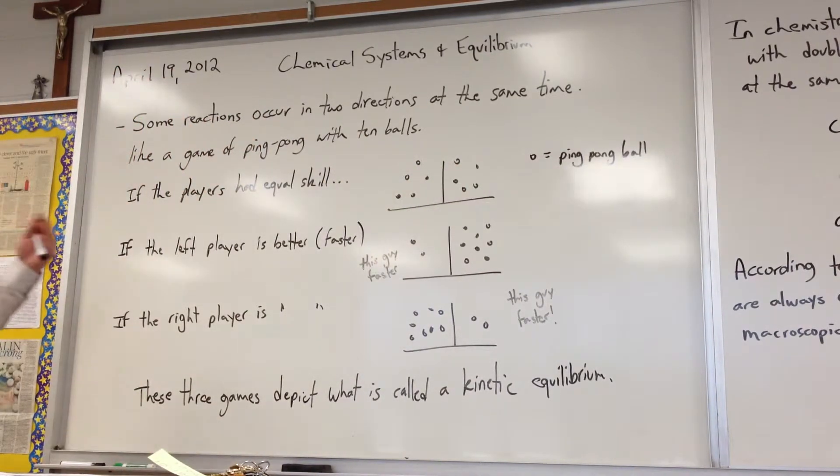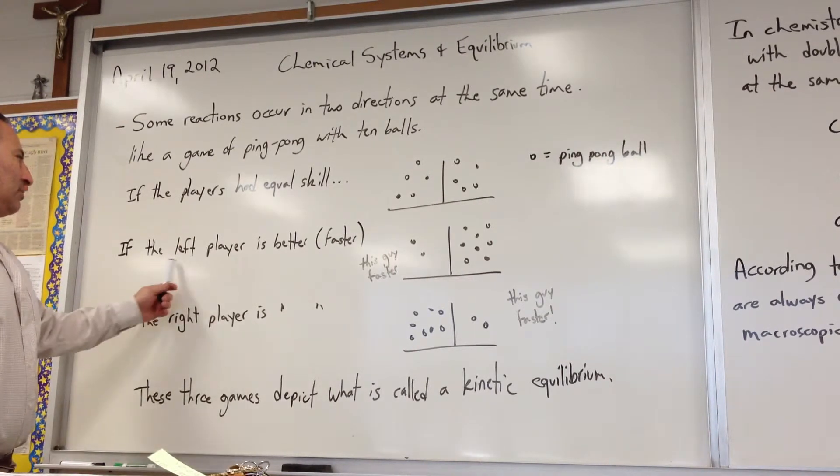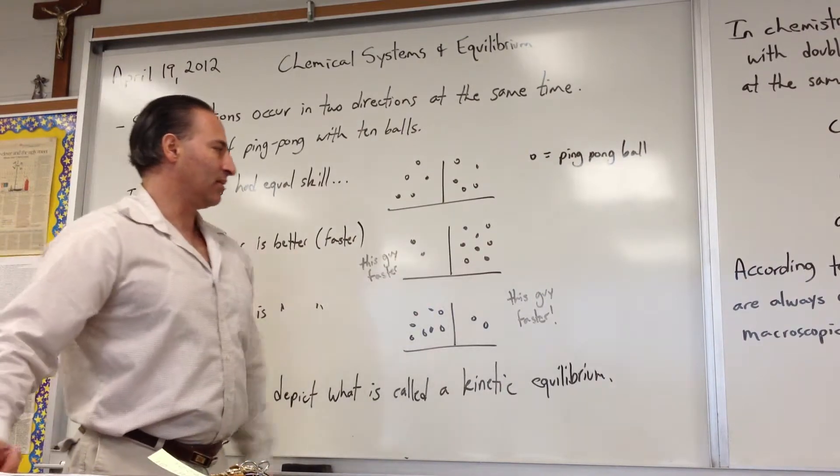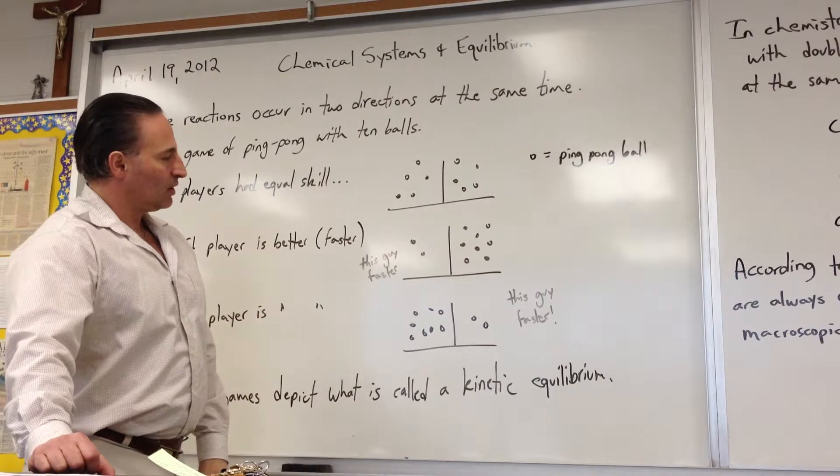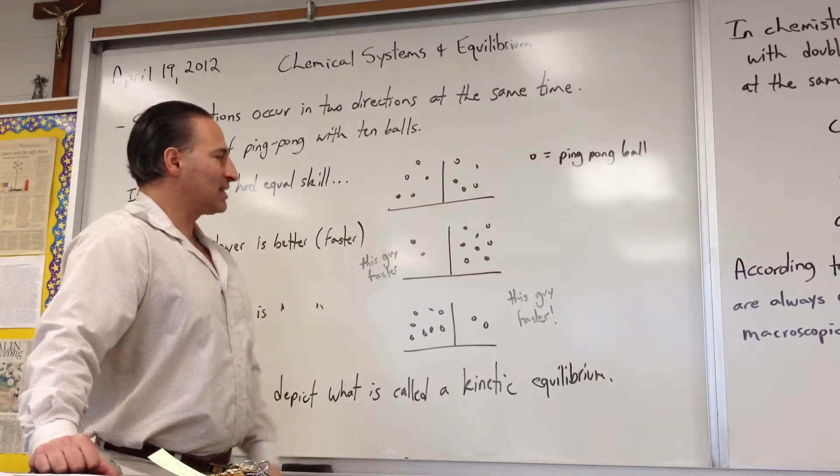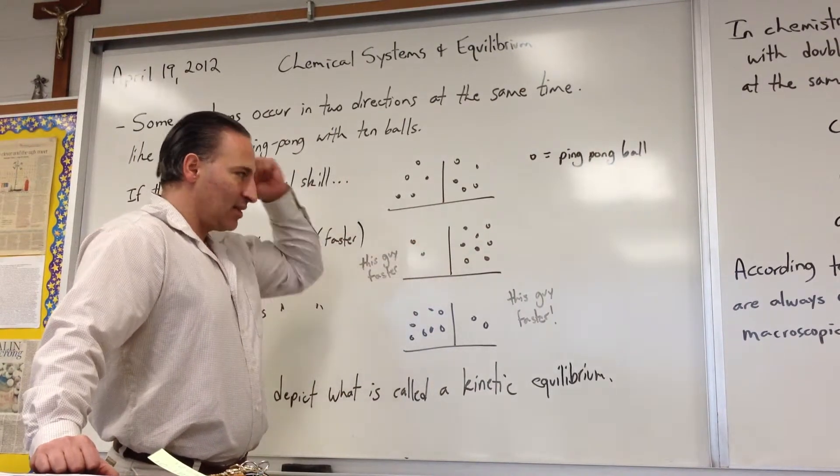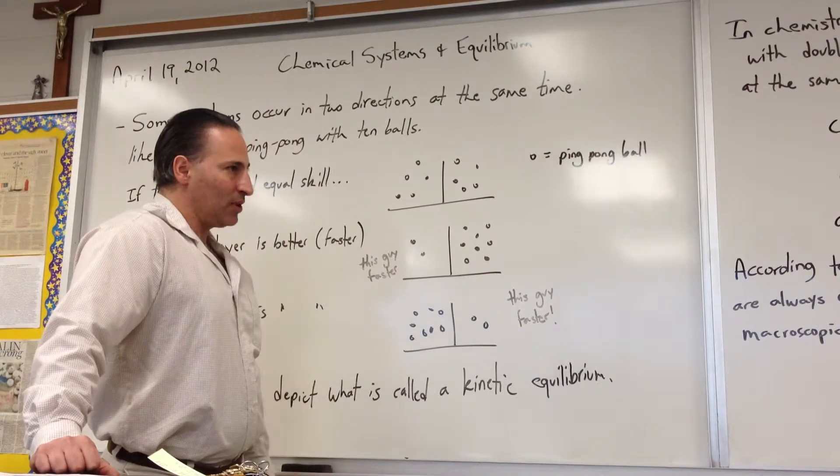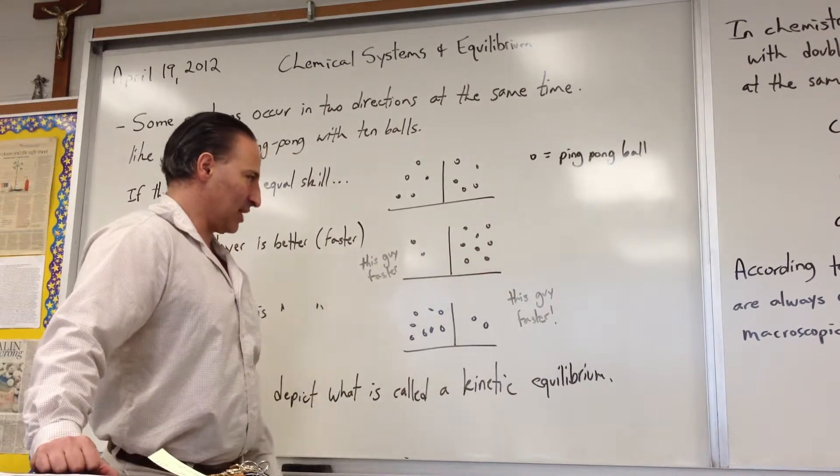Now let's imagine for a moment that one player is better than the other. The player on the left-hand side in this example is better than the player on the right-hand side, so he manages to swat the balls away from his side faster than the player on the other side. At some point, he's going to have fewer balls on his side than the player who's not as good.